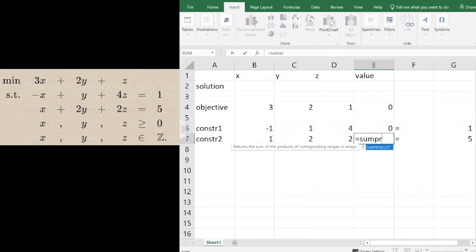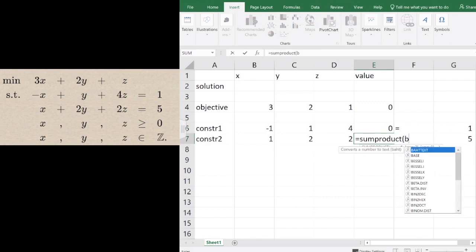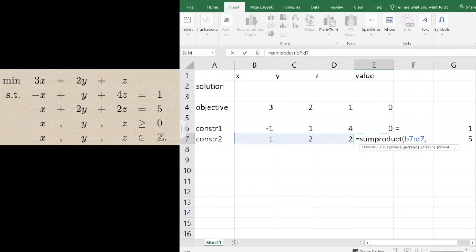For the second constraint, the value of the left-hand side is given by the sum product of B7 to D7 with B2 to D2.